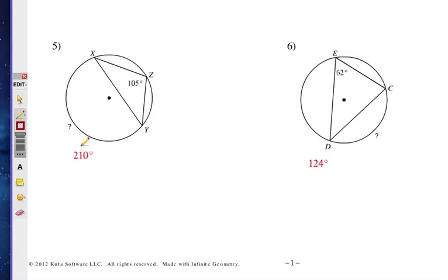Number 5 is 210 degrees. And if for some reason you didn't get that, remember that Z here is an inscribed angle. And we have this side of the angle, and this side of the angle, and it opens up into an arc, XY, it's a major arc, basically. And remember that the inscribed angle is half as the arc it creates, so there you go. You double it, and that'll give you 210 for the arc.